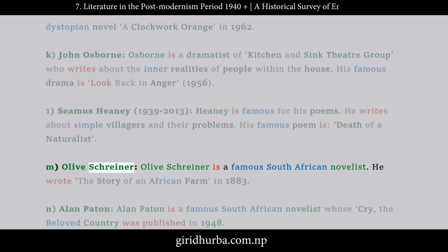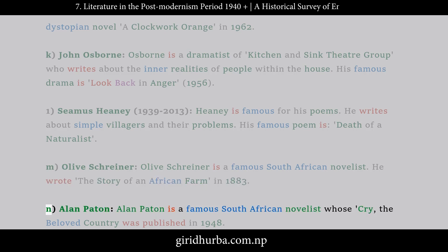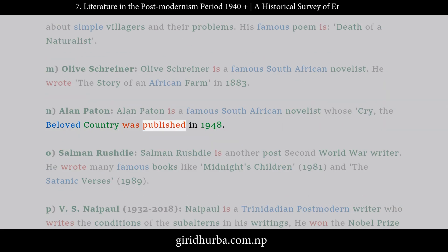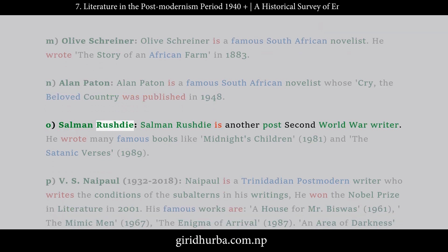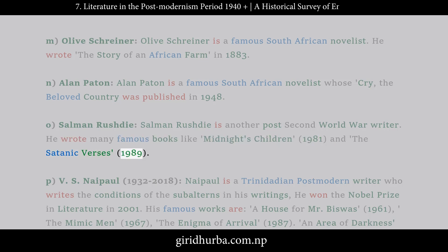M. Olive Schreiner: Olive Schreiner is a famous South African novelist. He wrote The Story of an African Farm in 1883. N. Alan Paton: Alan Paton is a famous South African novelist whose Cry, The Beloved Country was published in 1948. O. Salman Rushdie: Salman Rushdie is another post-Second World War writer. He wrote many famous books like Midnight's Children (1981) and The Satanic Verses (1989).